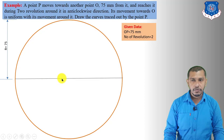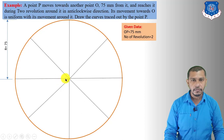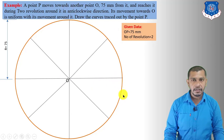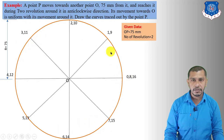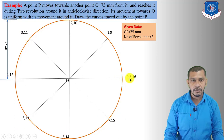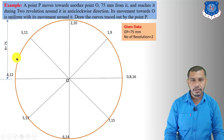Draw a circle with radius 75 mm and divide it into equal parts. Give the numbering in the anticlockwise direction for two convolutions: 0, 1, 2, 3, 4, 5, 6, 7, 8 for the first convolution, then continuing 9, 10, 11, 12, 13, 14, 15, 16 for the second convolution.